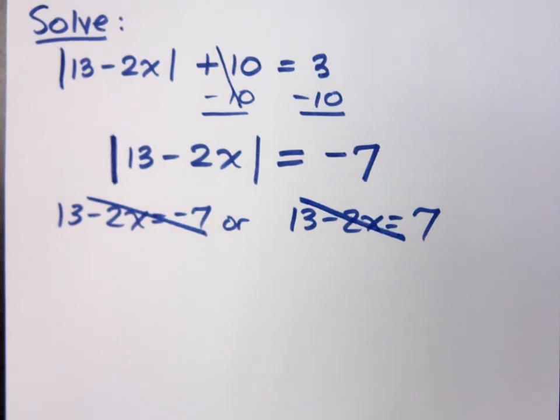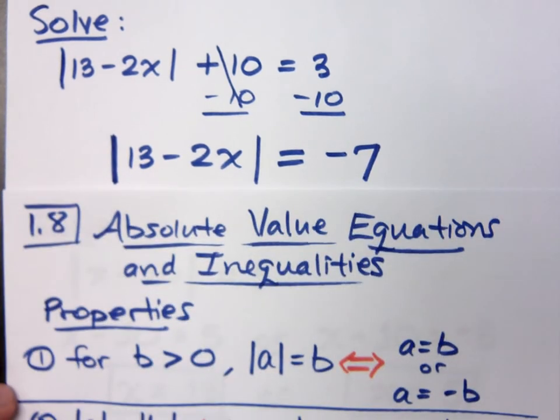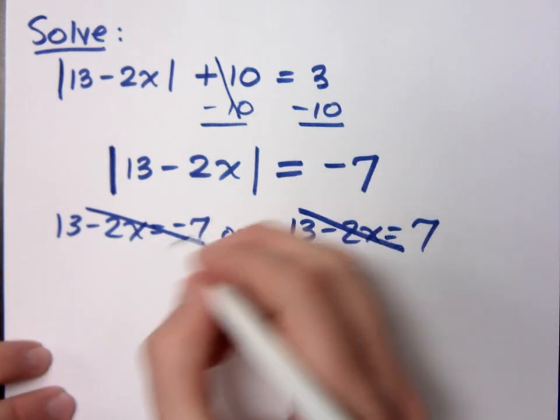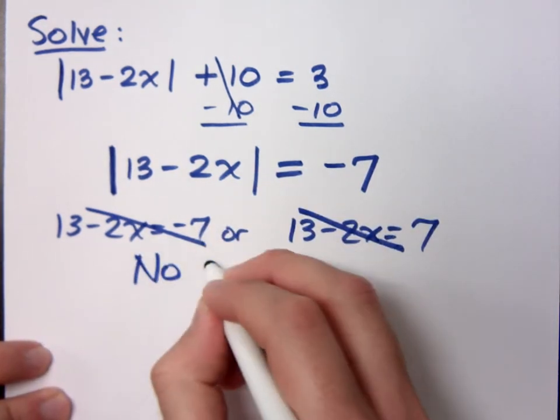Look at the property that we wrote. The property was when this number right here is greater than zero. Am I greater than zero? No. So this guy doesn't make any sense, and so the answer here is no solution.